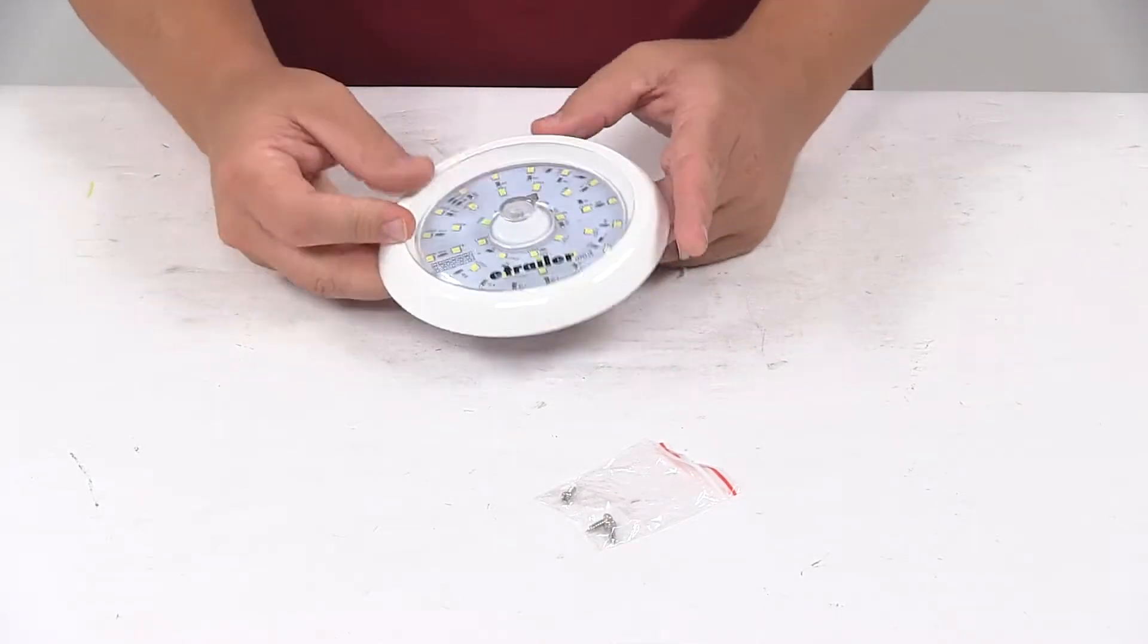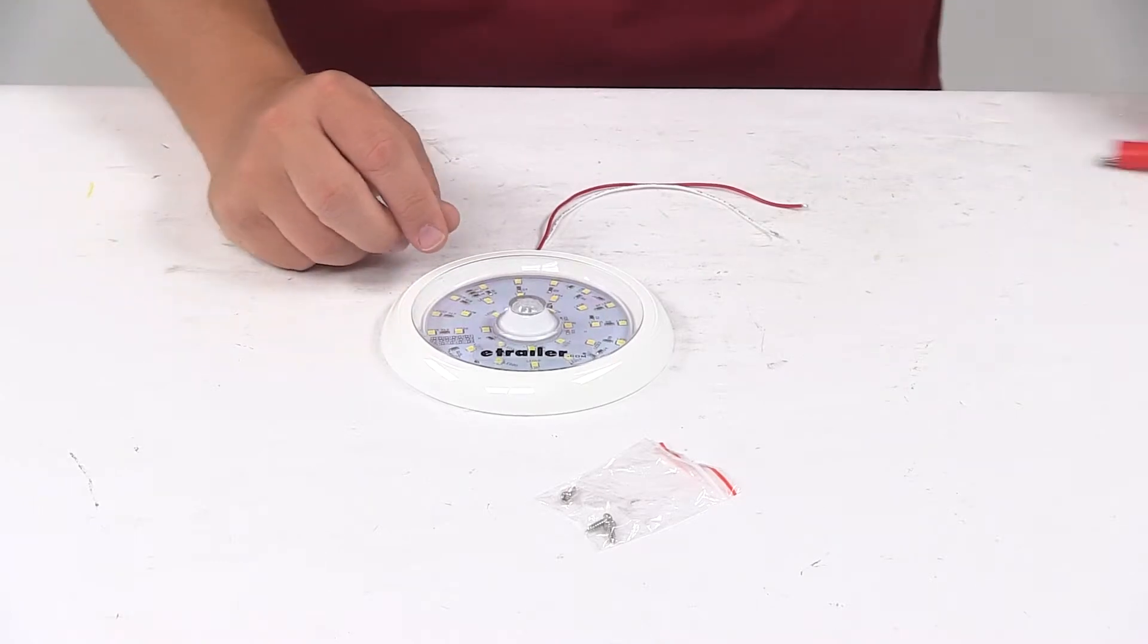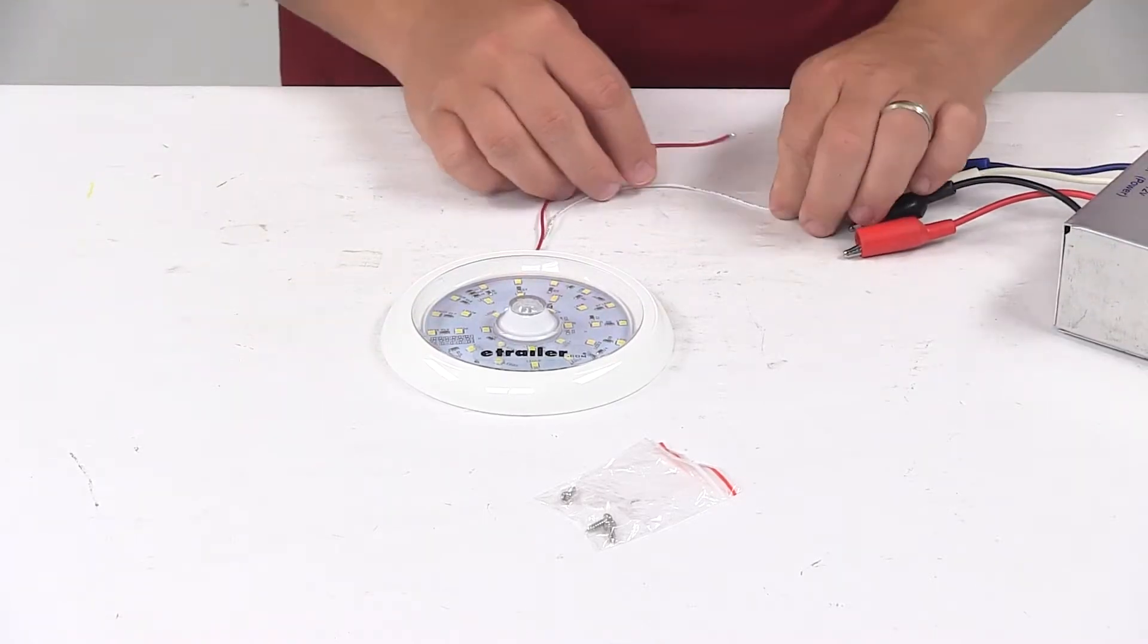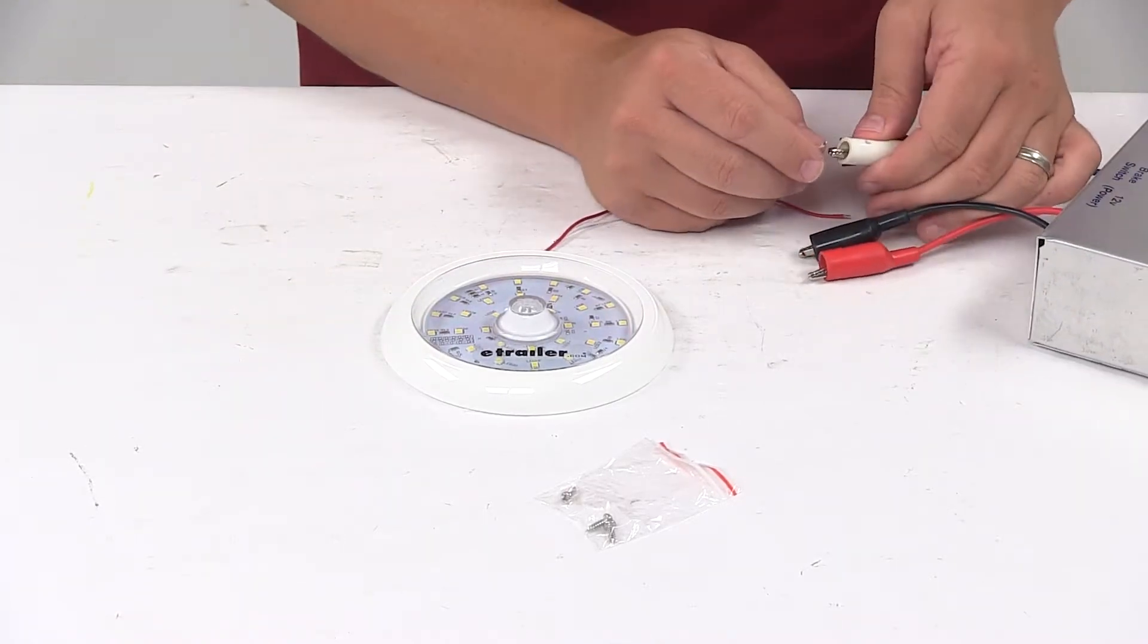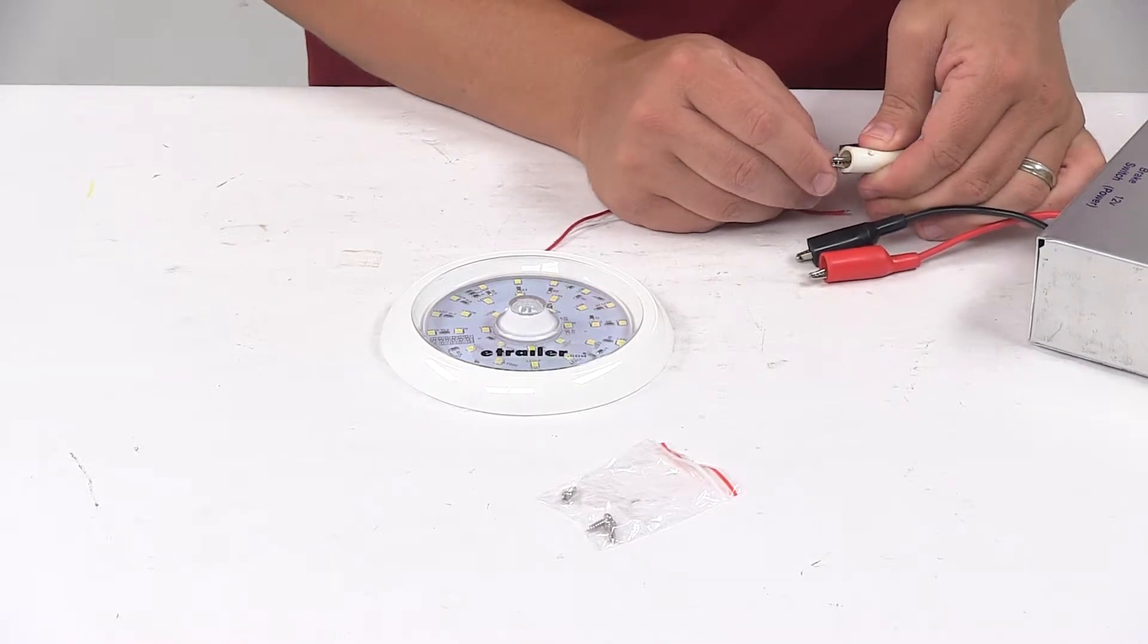Again, it contains a total of 36 diodes. We're going to hook it up to power so you can see what it looks like with power running to it. We'll also turn off our overhead lights so you can see it in a low-light setting.